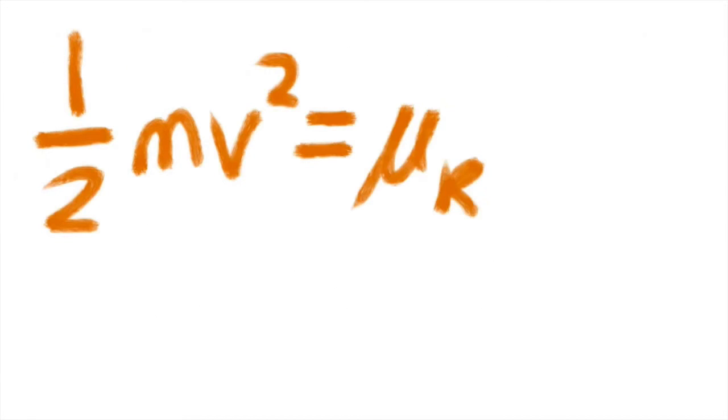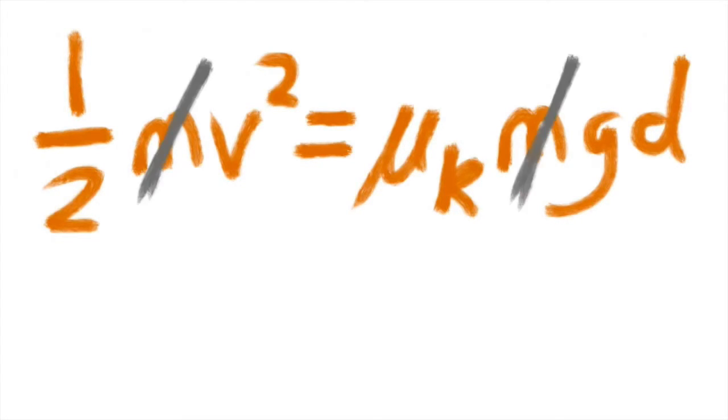Therefore, one-half mv squared equals mu sub k times m times g times d. We see the mass on both sides of the equations, so we can divide that out.